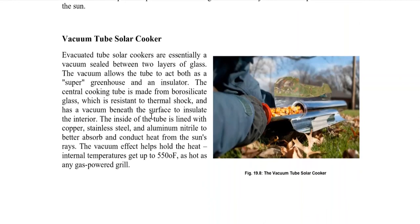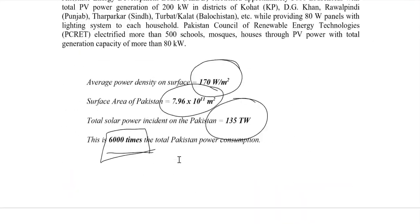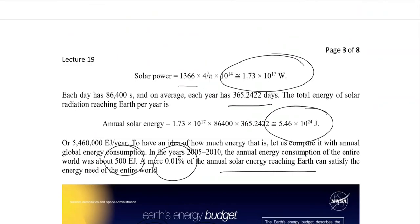The fourth type is the evacuated tube solar cooker, which is vacuum-sealed between two layers of glass. The vacuum allows the tube to act as both a super greenhouse and an insulator. The center cooking tube is made from borosilicate glass, resistant to thermal shock, with the inside lined with copper, stainless steel, and aluminium nitride to better absorb and conduct heat. The vacuum holds the heat, and internal temperatures can reach up to 55 degrees Fahrenheit — comparable to gas power. This concludes the discussion on solar heating and cooking, with solar power to continue in the next lecture.